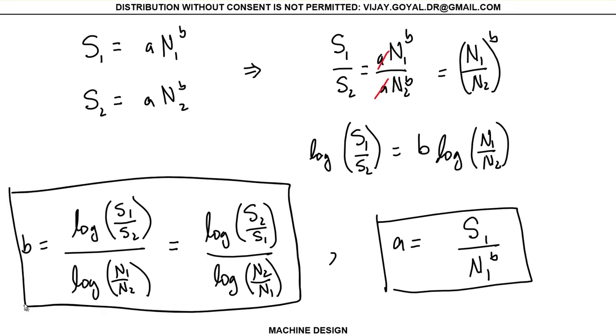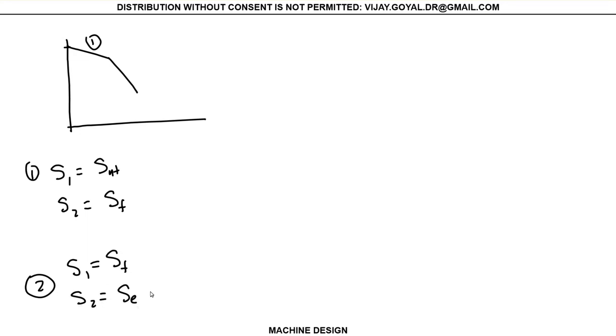Now for plotting purposes, you will have several plots. For the traditional plot, you will do from first segment to segment number one. For segment number one, you will say S1 is equal to S-u-t. Segment number two is equal to S-f. For segment number two, S1 is equal to S-f, S2 will be S-e or S-n depending on the case.